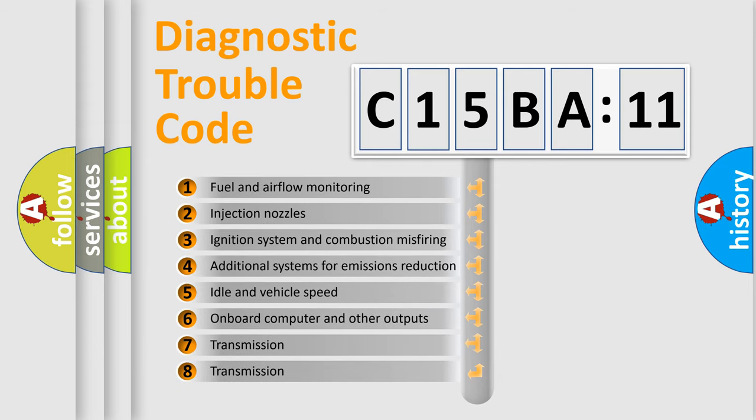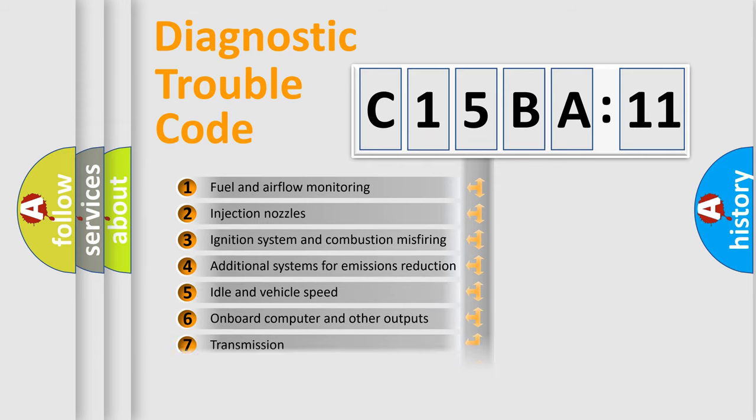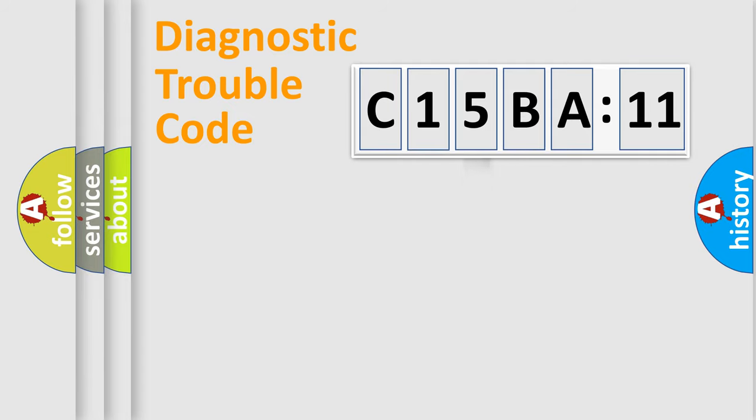The third character specifies a subset of errors. The distribution shown is valid only for the standardized DTC code. Only the last two characters define the specific fault of the group.